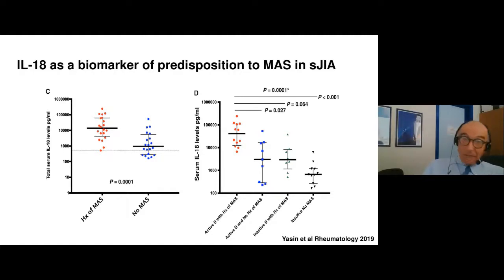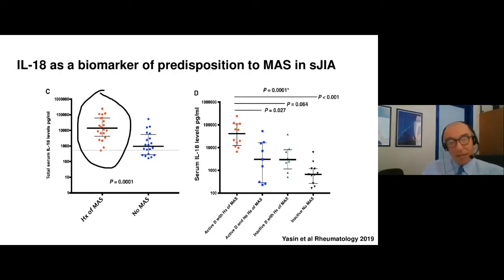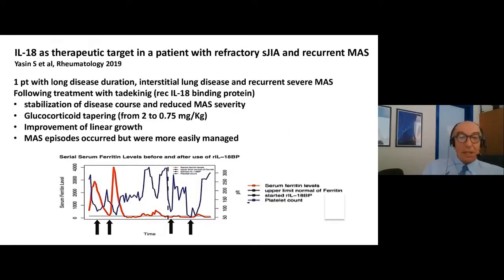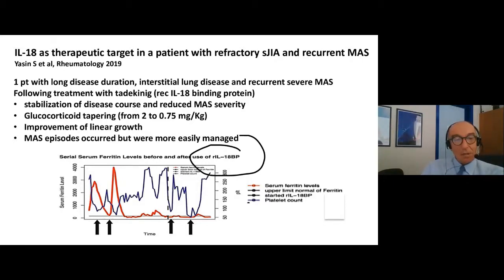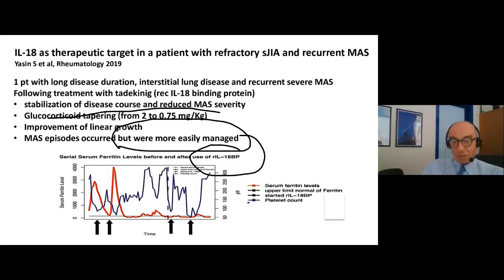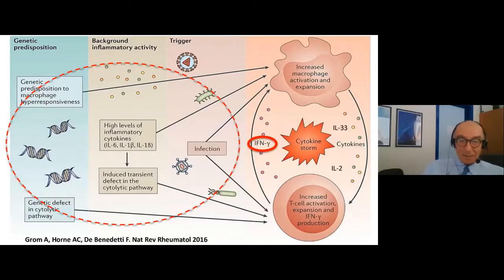Another cytokine already alluded to is IL-18. Patients who have MAS tend to have higher IL-18 levels. One patient treated with recombinant IL-18-binding protein showed some therapeutic effect — not a complete effect, but some — with the ability to reduce glucocorticoids and more easily manageable episodes. Not a miracle, but better than nothing.